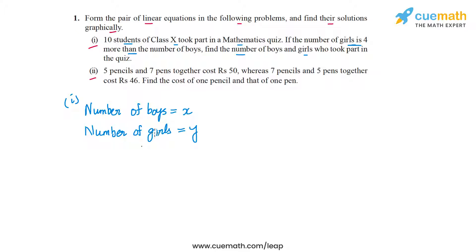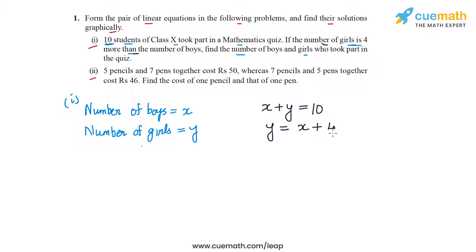We have a total of 10 students who took part in the quiz, which means x plus y should be equal to 10. So our first equation is x plus y equal to 10. Also, the problem says the number of girls is 4 more than the number of boys, so we can write y equal to x plus 4. This is our second equation. So we got two equations: x plus y equal to 10 and y equal to x plus 4. Let's plot both of these equations and find the solution graphically.